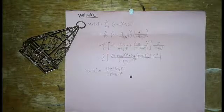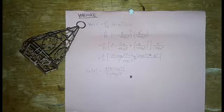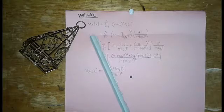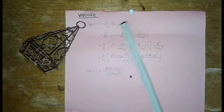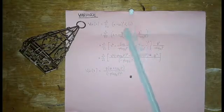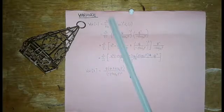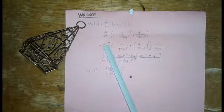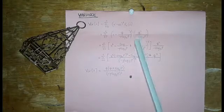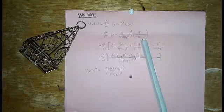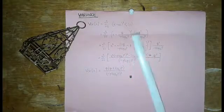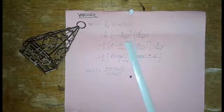Next is our variance. Using the same process as for the mean, the formula for variance is summation of (x - μ)² times f(x), as x goes from 0 to n. This equals summation of (x - q over negative p log(p) base e)² times q^x over negative x log(p) base e, since μ equals q over negative p log(p) base e.